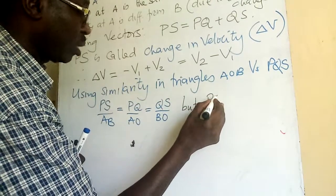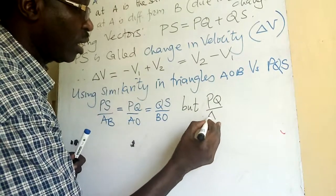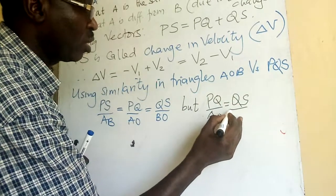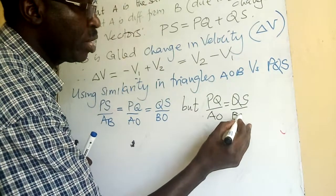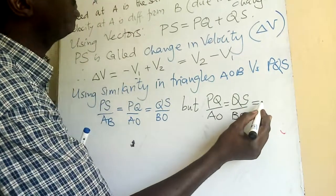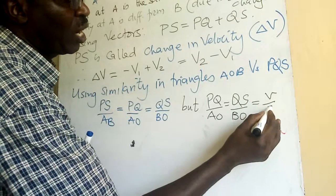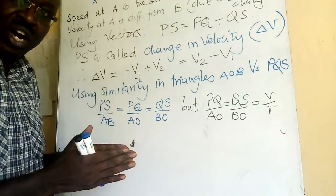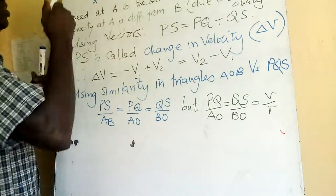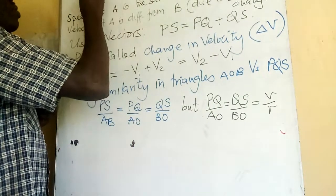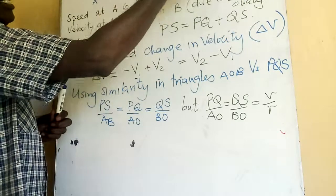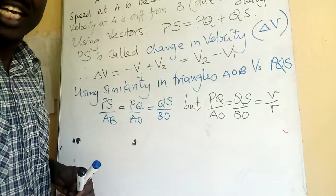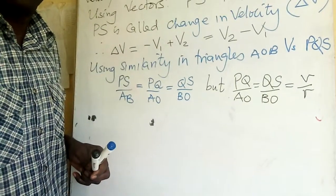PQ over AO is equal to QS over BO, which is basically v over r. AO and BO are radii, so this ratio is essentially v over r. These are the scalar aspects of velocity.